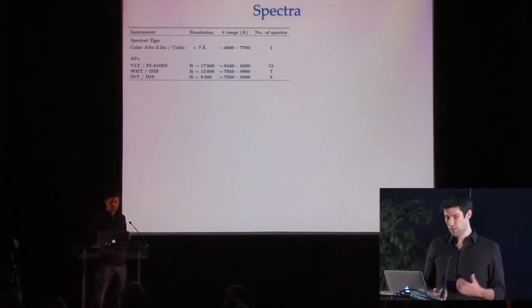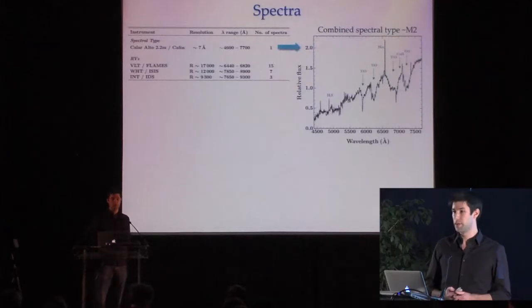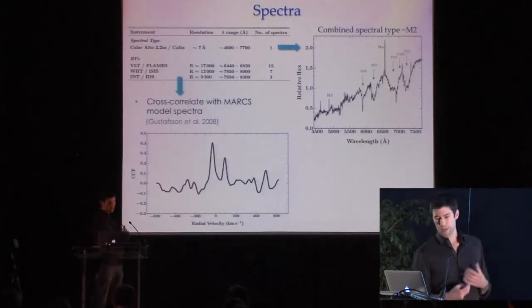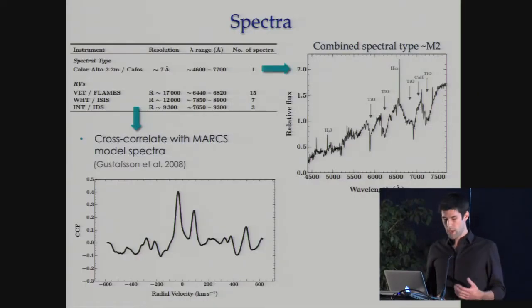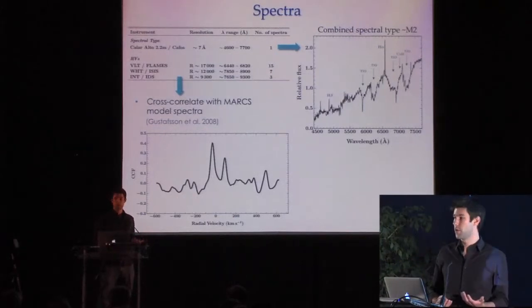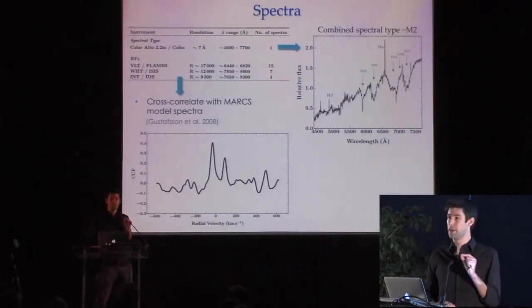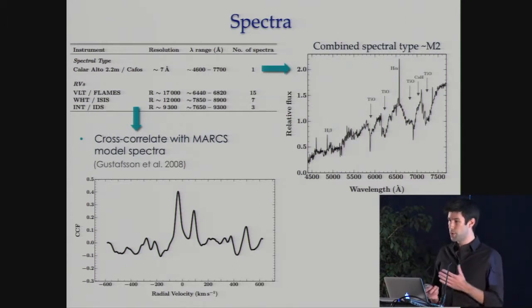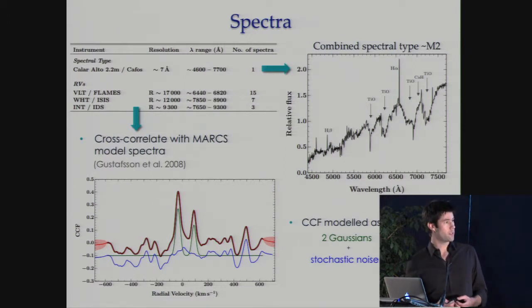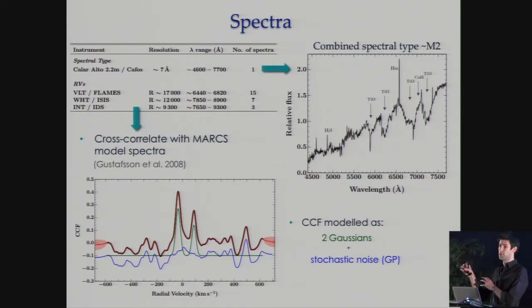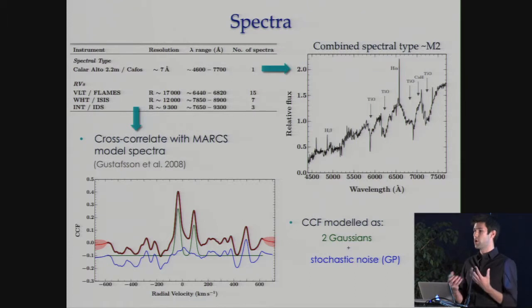That additional information comes from spectroscopy. We took a low-resolution spectrum to determine a combined spectral type of M2, telling us we're dealing with low-mass stars. We then took medium-resolution spectroscopy cross-correlated with high-resolution MARCS model spectra to create cross-correlation functions. The CCF is made up of two stellar peaks plus significant correlated noise, which we model simultaneously by fitting each CCF as the sum of two Gaussians plus a Gaussian process noise term, to accurately determine the radial velocities of both stars.